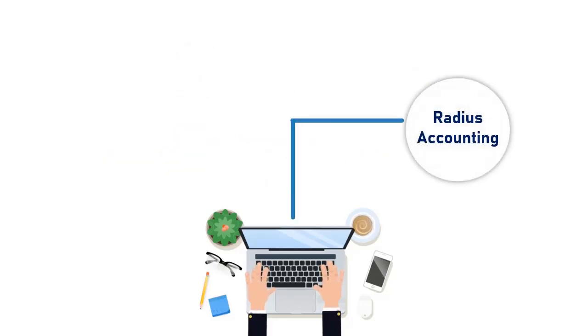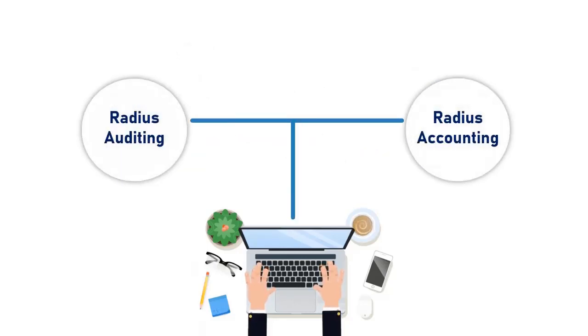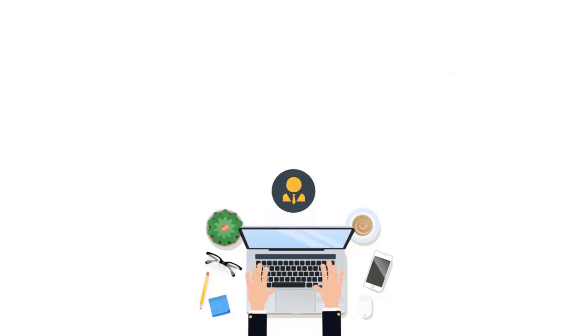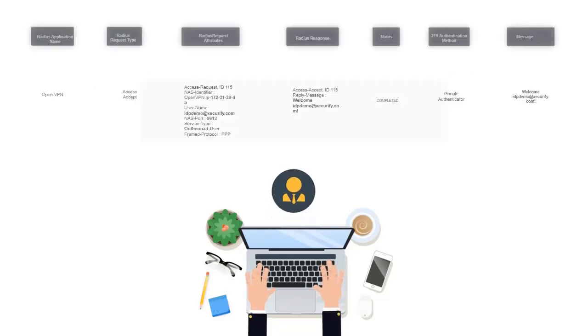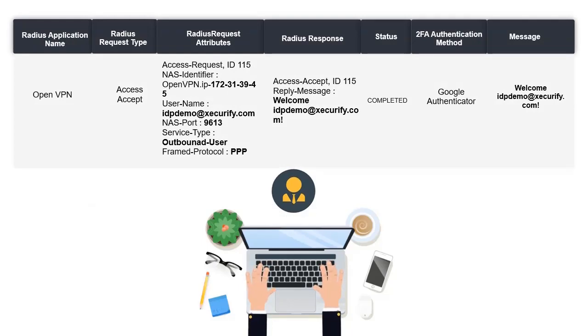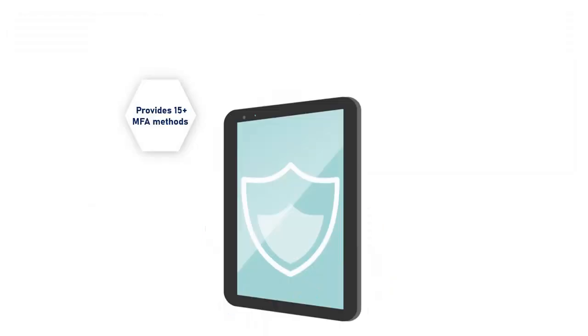Additional features like Radius accounting and Radius auditing are also included in the Mini Orange feature stack. This allows the administrator to keep track of the Citrix usage of the users and all of their login events.